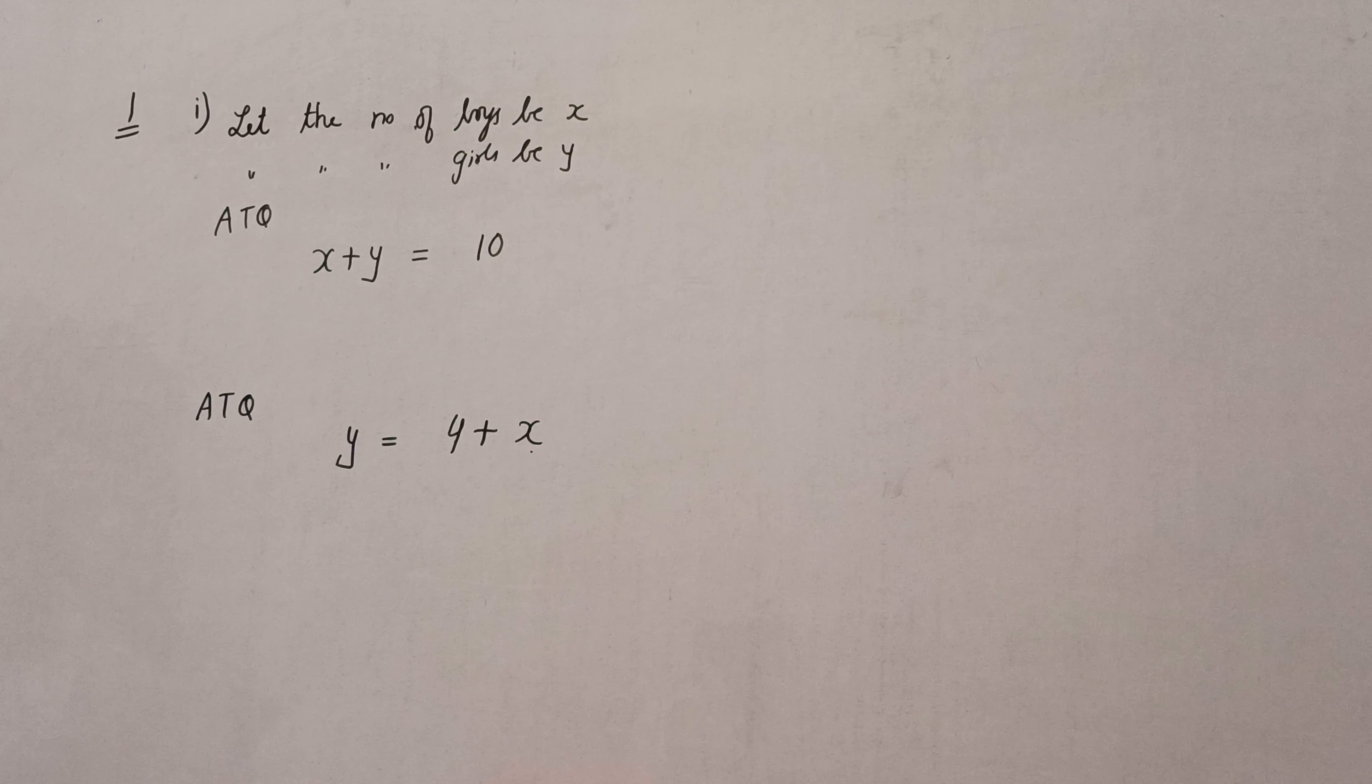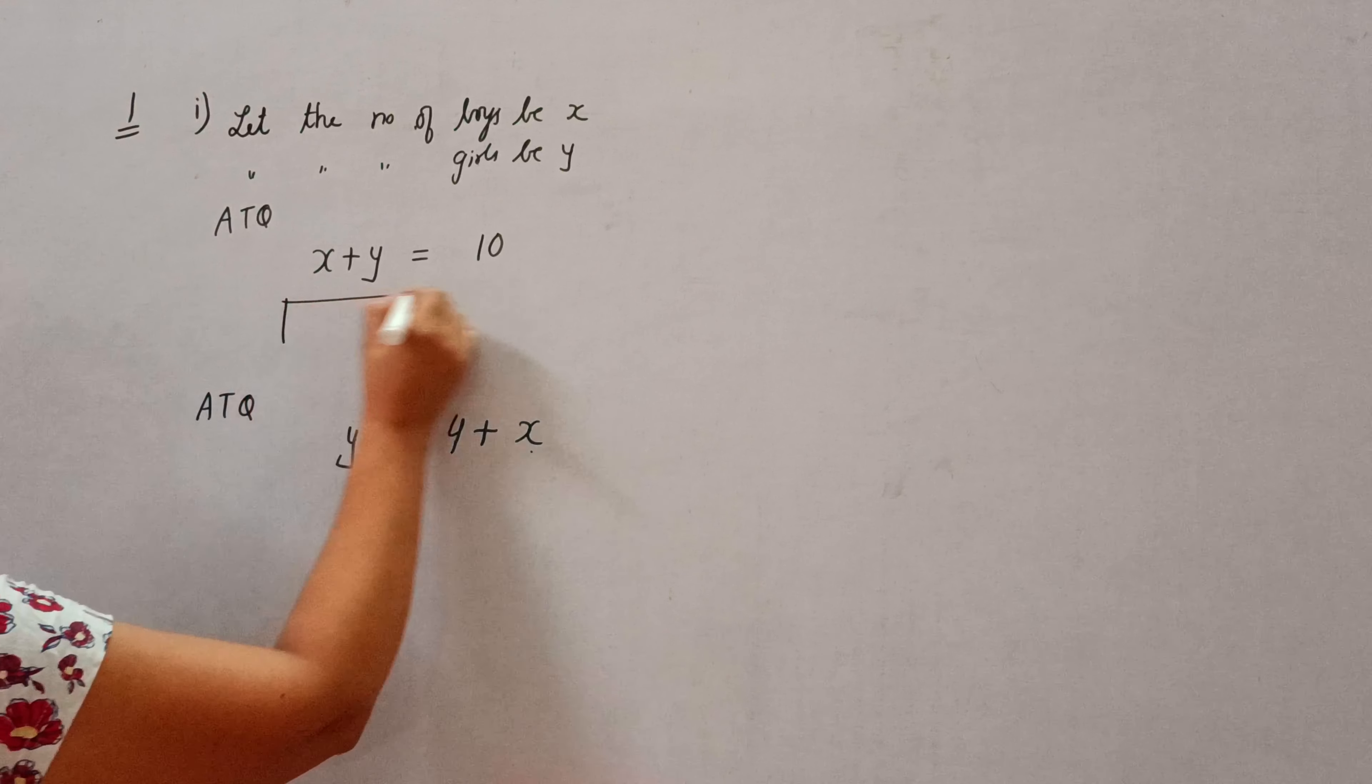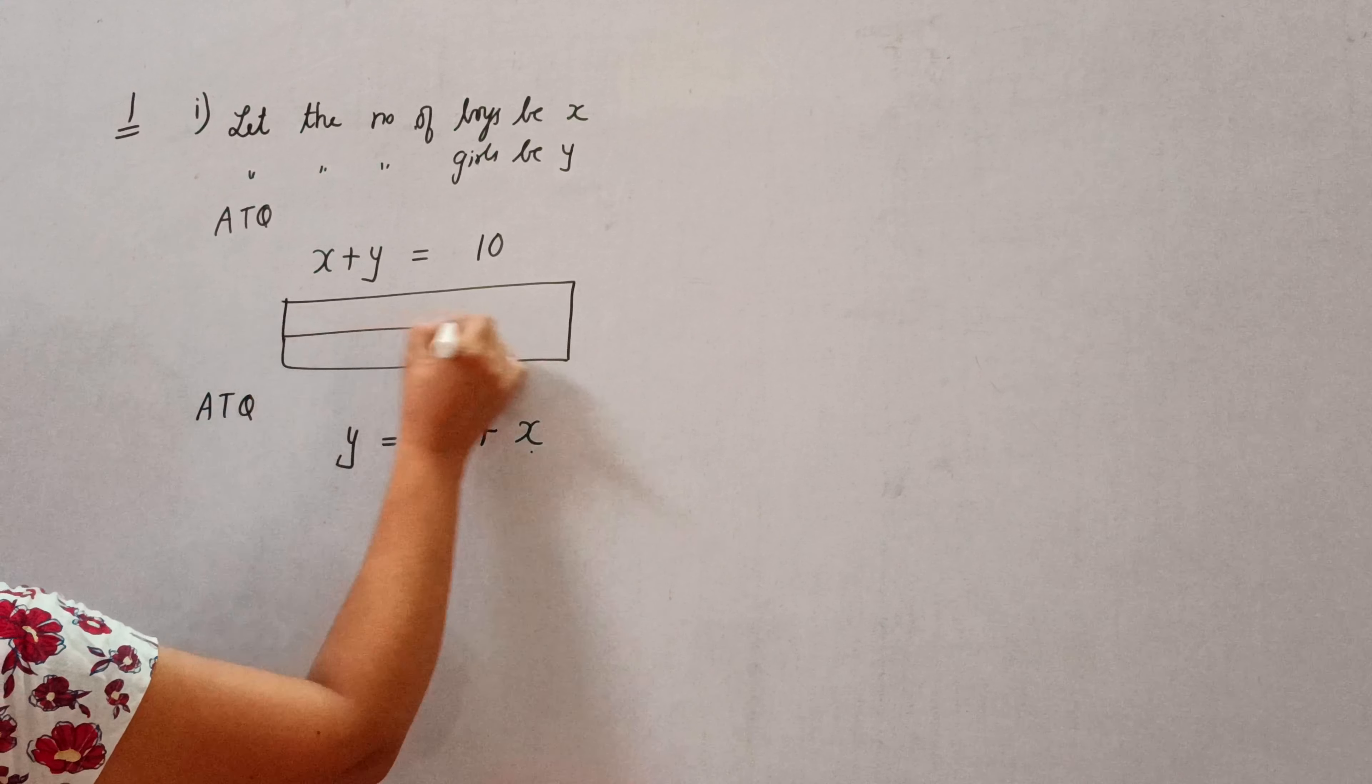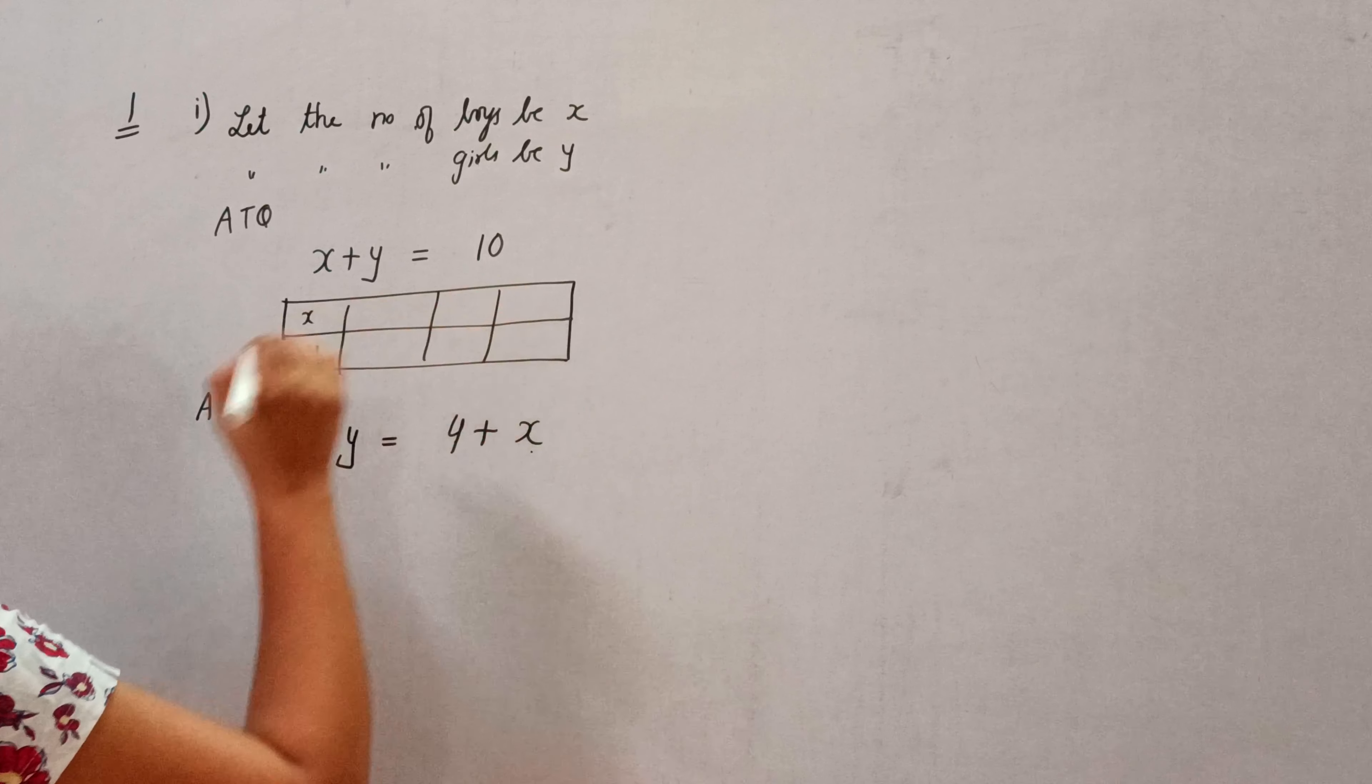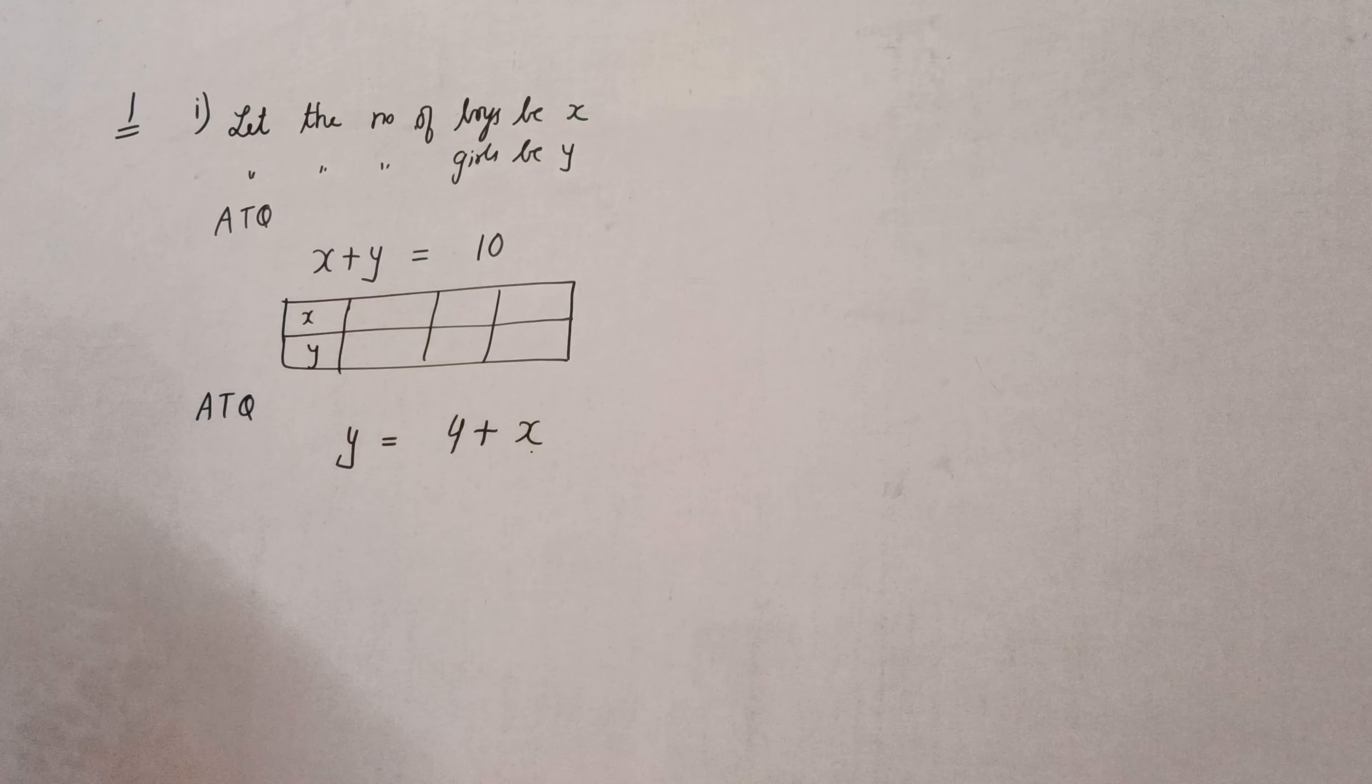Find the number of boys and girls and now we need to find their solution graphically. So graphically means we need to draw their graph. So first of all we will make the table, we will find their solution.